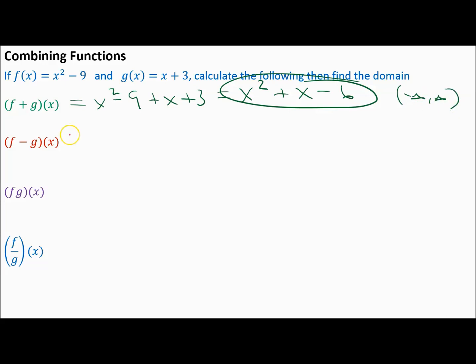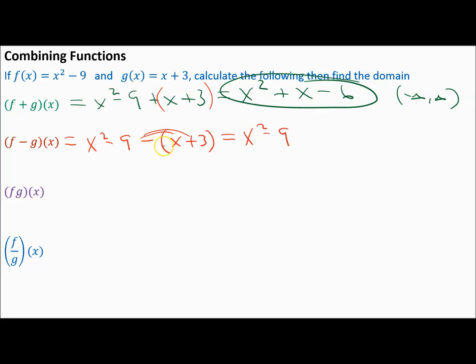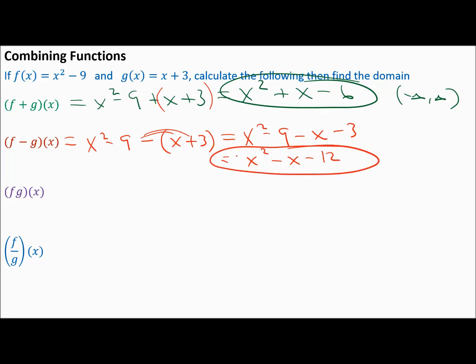For subtraction, remember parentheses are required around the second function. Write x squared minus 9 minus (x plus 3). The negative distributes: x squared minus 9 minus x minus 3. Combining like terms gives x squared minus x minus 12. That is F minus G of X, a polynomial, so the domain is negative infinity to infinity.